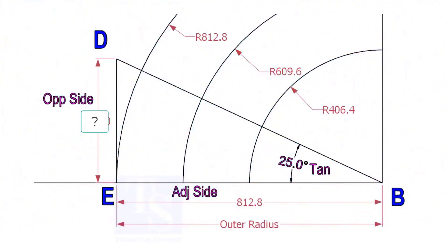Mark a line 25-degree rotated from the base line AB. To draw the line DB, we need to know the length of the line ED.